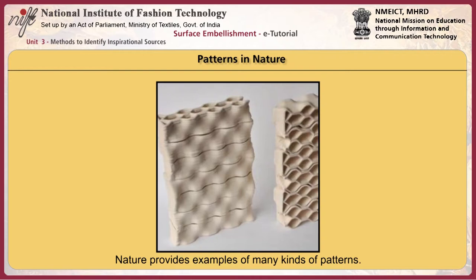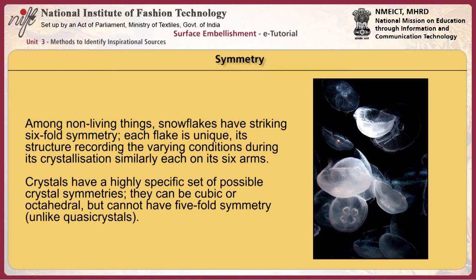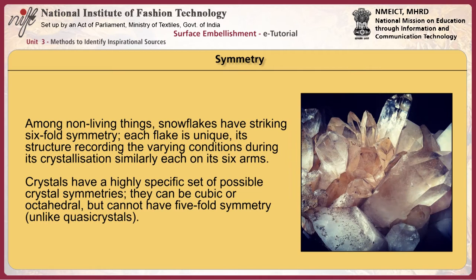Symmetry is widespread in living things. Animals that move usually have bilateral or mirror symmetry, as this favors movement. Plants often have radial or rotational symmetry, as do many flowers as well as animals which are largely static as adults, such as sea anemones. Five-fold symmetry is found in the echinoderms, including starfish, sea urchins and sea lilies. Among non-living things, snowflakes have striking six-fold symmetry — each flake is unique, its structure recording the varying conditions during its crystallization. Crystals have a highly specific set of possible crystal symmetries; they can be cubic or octahedral but cannot have five-fold symmetry.